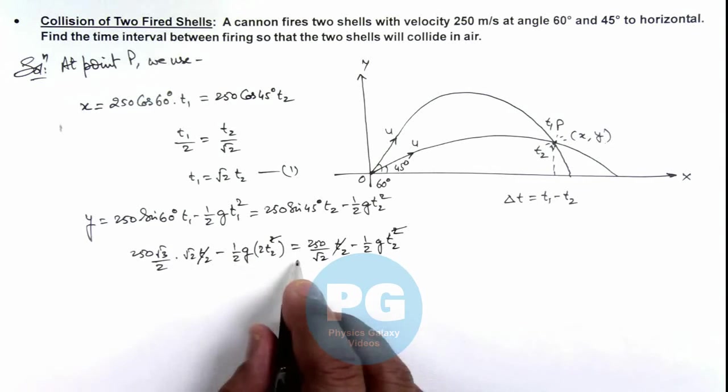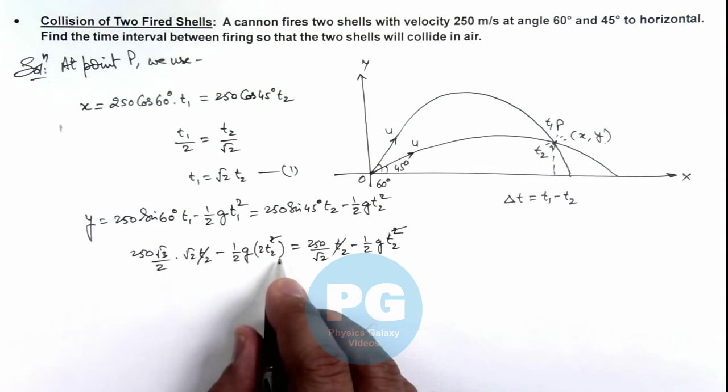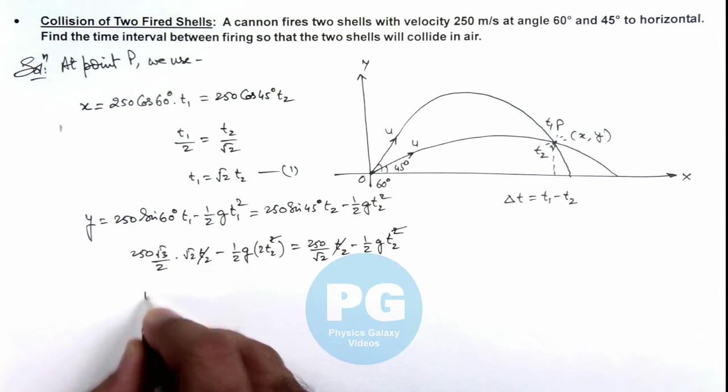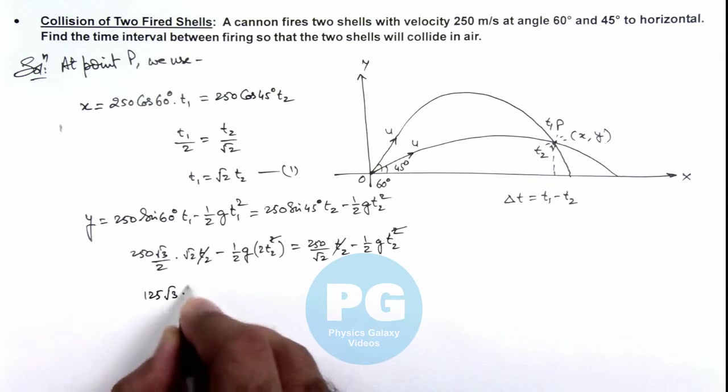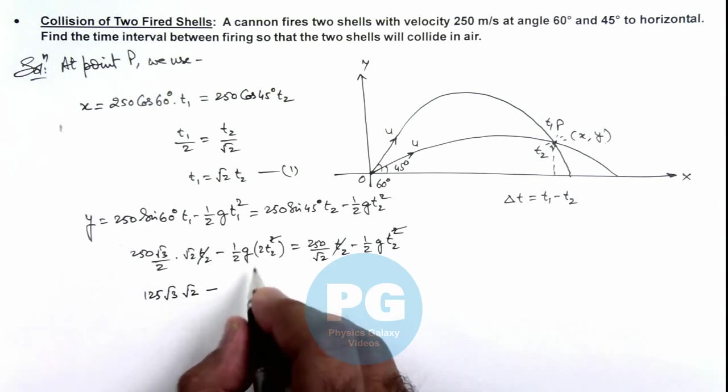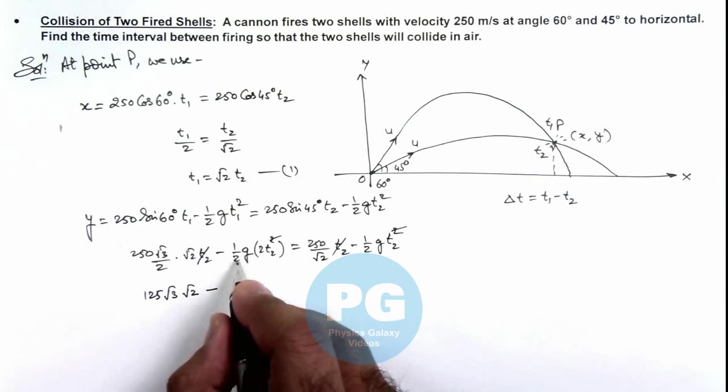On simplifying this, what we're getting is this will be 125√3 × √2 minus. Here this can be written as g/2, we can write as 5 × 2, this is 10t₂.